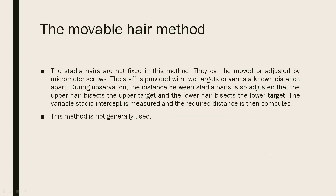The next one is the movable hair method. In this method, the stadia hairs can be moved or adjusted. The staff provides two targets or vanes. The vertical angle is measured, and the record distance is computed. This method is used in specific applications where fixed hairs are not suitable.